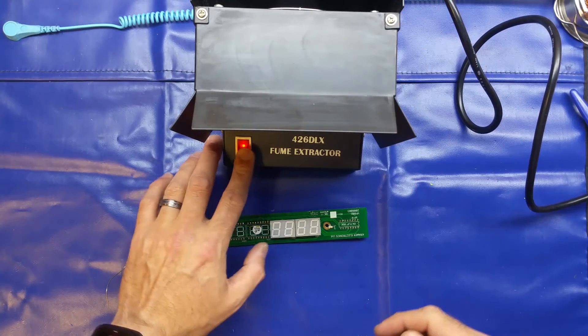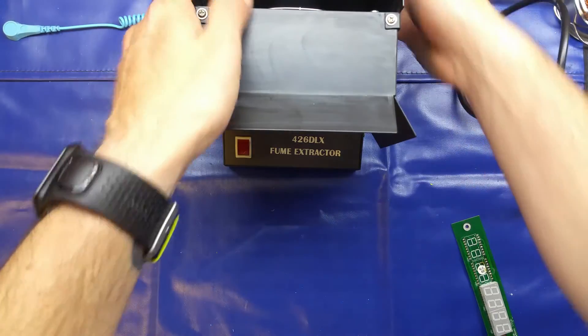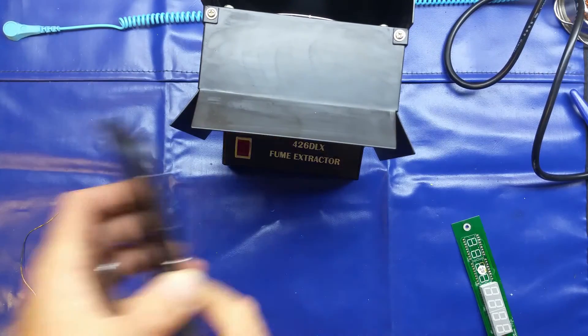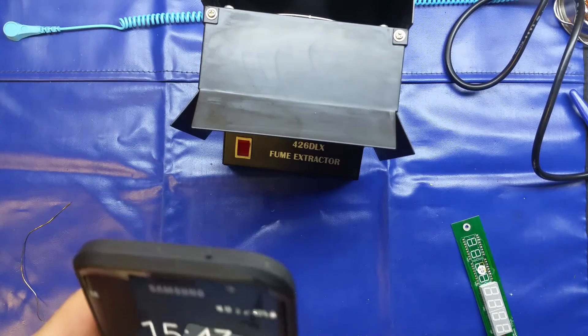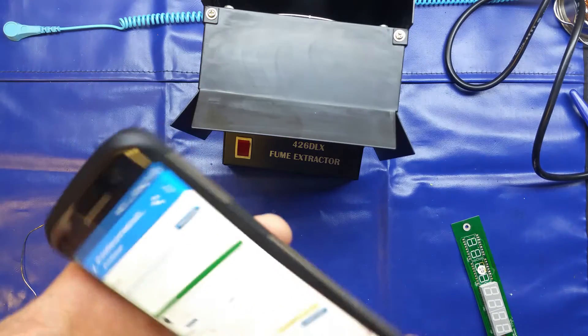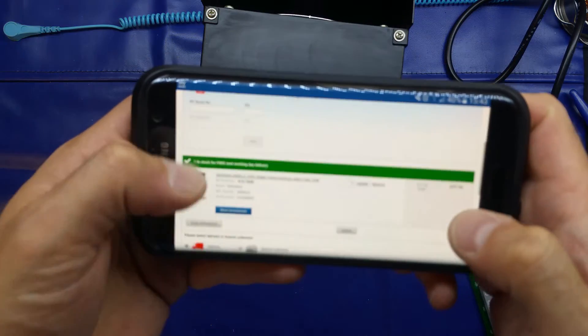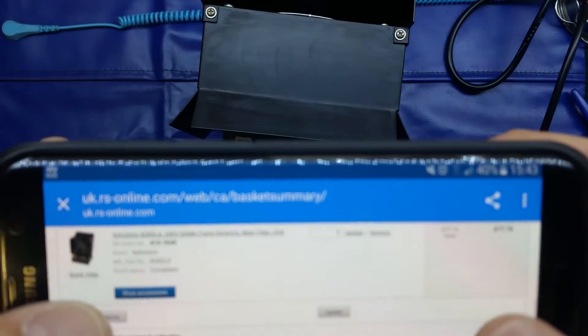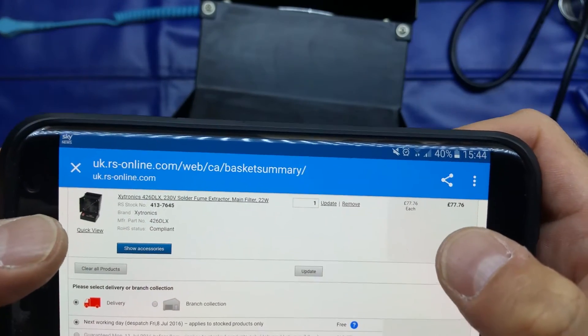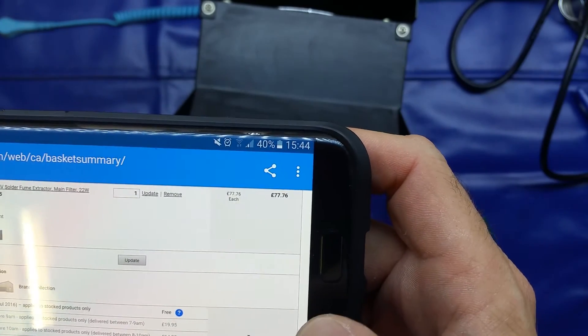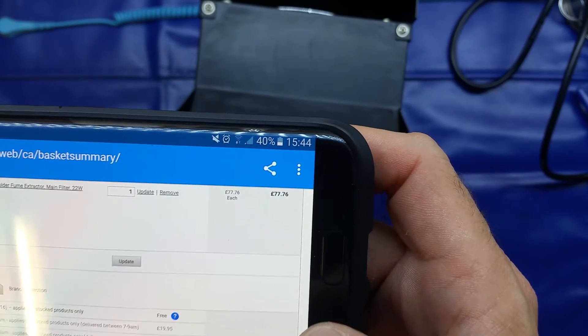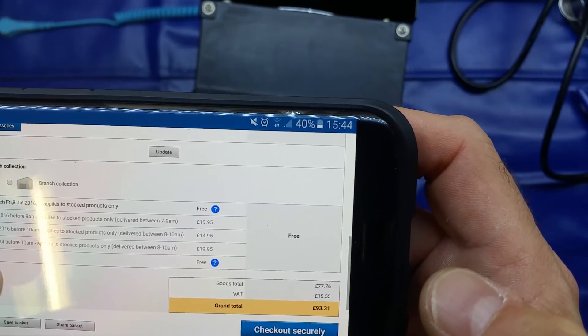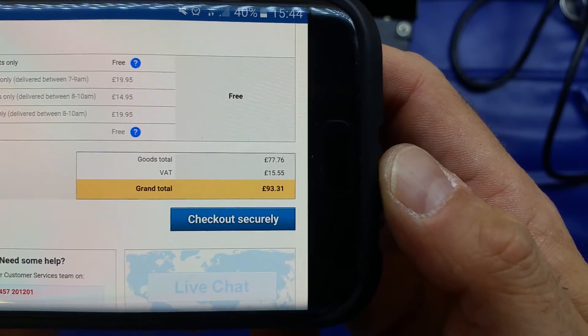Now, I'll just turn the unit off. Now, this item you can purchase from RS Components, and if I just bring that up on my phone, on my other phone I should say, hopefully you should be able to see that. There we go. So, list price from RS Components, or Radio Spares, 77 pounds, 76 pence. And, including the VAT, that takes it up to 93.31.